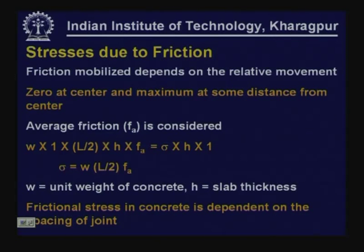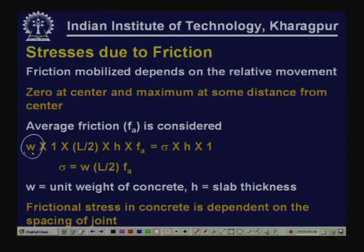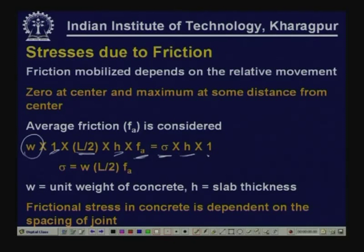This can easily be calculated. The friction mobilized depends on the relative movement — zero at center and maximum at some distance from center. Average friction Fa has to be assumed. So assuming W is the unit weight of concrete, L/2 is the portion of slab being considered, H is the thickness, 1 is the width, and Fa is the average coefficient of friction — the stress that is generated can be computed using the given expression.